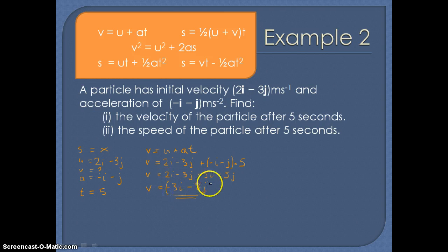So that will be our velocity after the 5 seconds. Minus 3i minus 8j meters per second. So that's part one calculated.